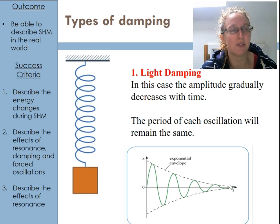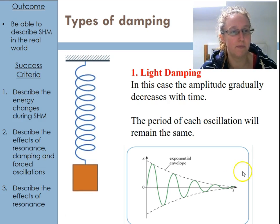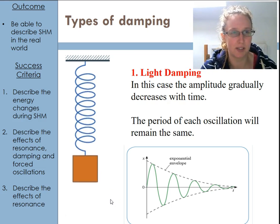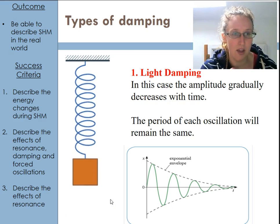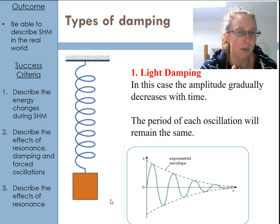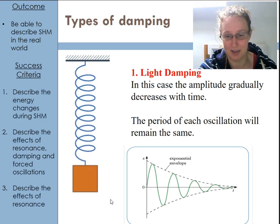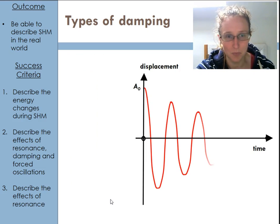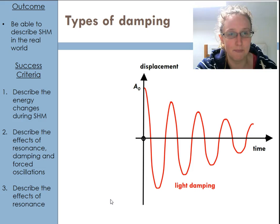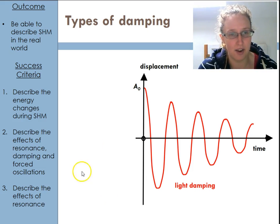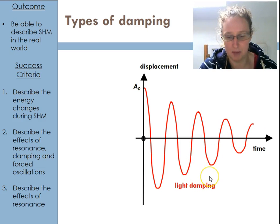This is kind of what you get with a spring. When you push a swing, it'll slowly swing to a stop — it's probably the one that you'll observe the most. A pendulum would have light damping as well. That graph shows another example of light damping: amplitude gradually decreasing, happening over the same time period.